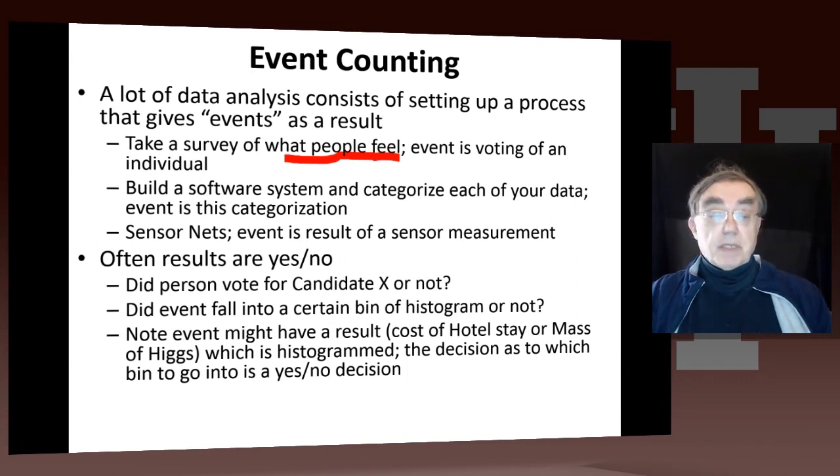Sometimes results are yes, no. They can, of course, be totally different. They can be red or blue, or in the case of physics, this is a pi meson of such and such momentum and such and such direction. And the quality of our understanding of this particle is x percent. But sometimes they're just yes, no. Did the person vote for candidate X or not? Did the event fall into a certain bin of a histogram or not? So when you have histograms, when you put things in bins, you're actually giving a yes, no decision for each bin.